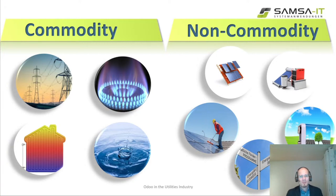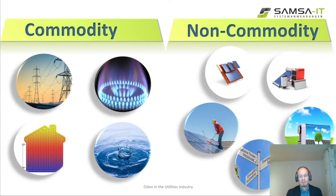The utilities industry divides products between commodity and non-commodity. Commodity products are electricity, gas, heat, and water. Non-commodity products are pretty much everything else: photovoltaic panels, solar heating, battery storage, also services like maintenance, energy efficiency consulting, and even insurances — for example for photovoltaic panels.